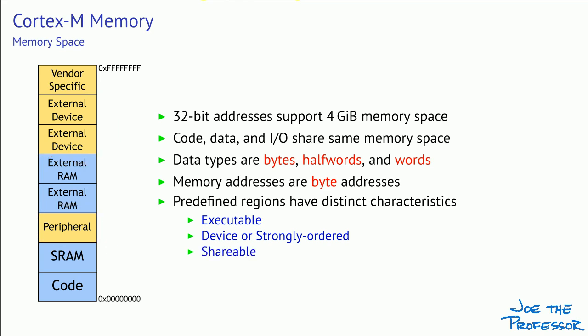Finally, some spaces are considered to be shareable — in particular, the RAM spaces and the external devices — which means that in a multiprocessor system, or with a peripheral that can access memory directly, we can allow multiple devices to access the same memory space.